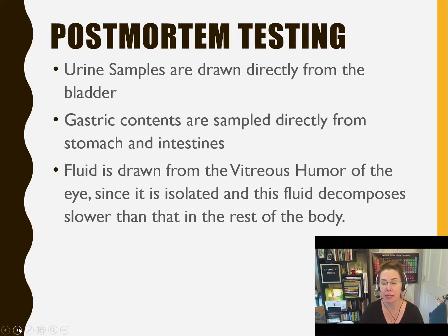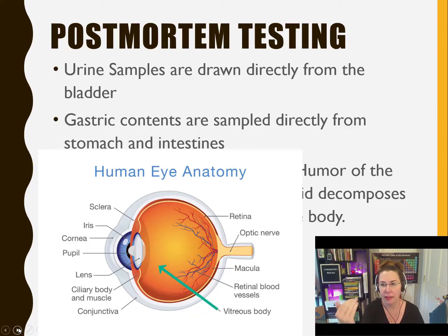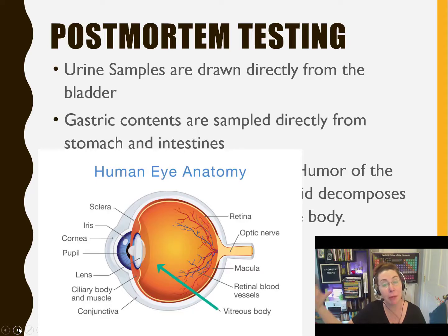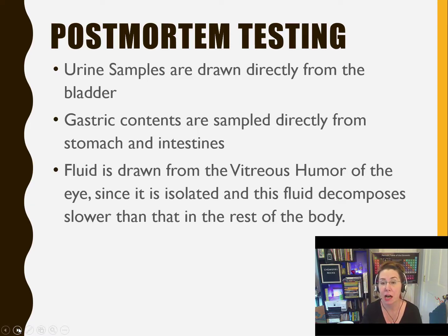They will also oftentimes take fluid from the vitreous humor of the eye. Your eye is like a little bag of jelly — the vitreous humor is the jelly-like fluid in your eye that is crystal clear and allows light to focus within the eye. Because it's isolated within the eye, if the body has already started to decompose, that fluid is oftentimes preserved because it's kept isolated from the rest of the body. Sometimes they can draw fluid from the vitreous humor with a hypodermic needle and find evidence of poisons or toxins that might have already disappeared from the rest of the body.